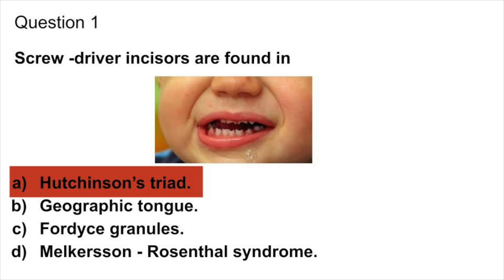Hutchinson triad has three clinical features: interstitial keratitis, malformed teeth, and eighth nerve deafness. In clinical features, screwdriver incisors are found in children. So the answer is Hutchinson triad.